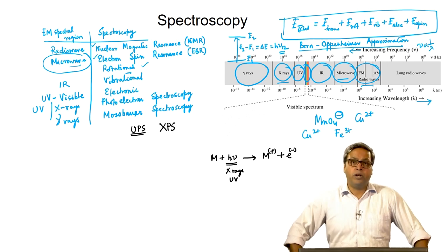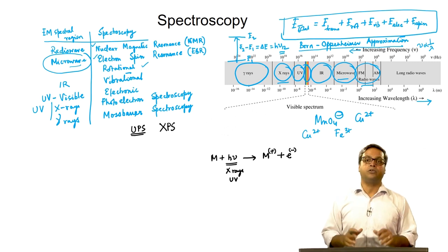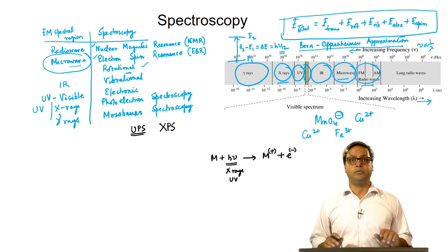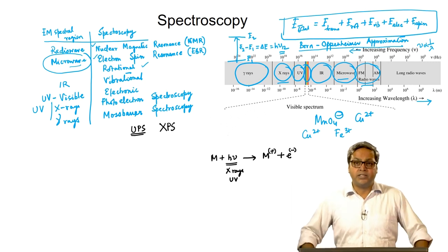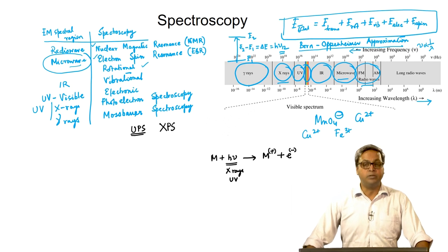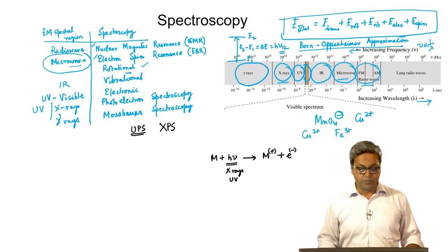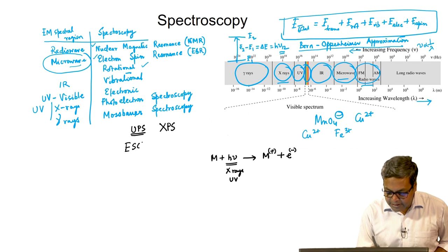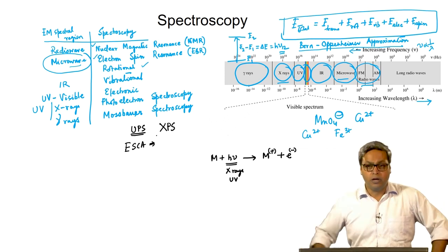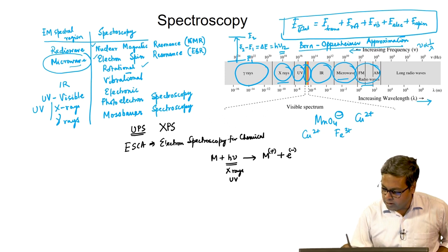When bonding between atoms forms molecules, only the valence electrons are involved; core electrons are not involved and their binding energy with the nucleus is least affected. Thus XPS faithfully reports the signature of atoms in molecules, allowing chemical elemental analysis to be done. This procedure is known as ESCA, or electron spectroscopy for chemical analysis.